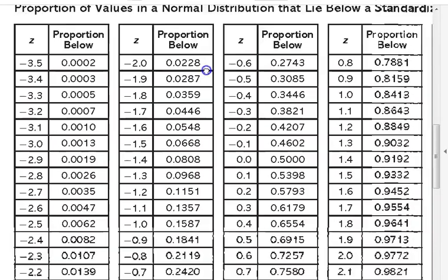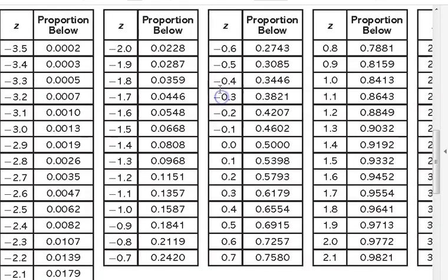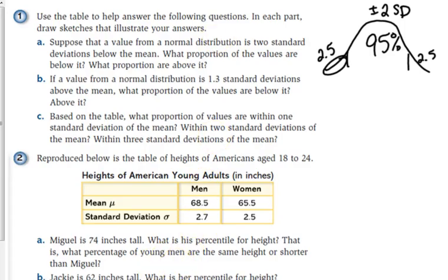So 2 standard deviations below, we're talking about negative 2 here for our z-score, because we're 2 standard deviations below. So you can see the proportion below, move your decimal two places to the right. So this says 2.28%. So it's pretty close. These tables are just a little bit more specific. They're a little bit more accurate.